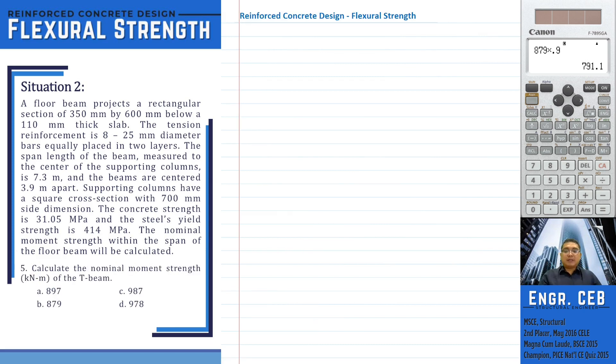Problem 5: Calculate the nominal moment strength of the T-beam. Let us confirm first if the steel yields. We already have epsilon_t.